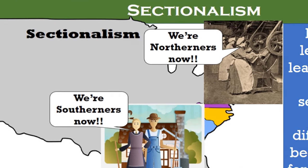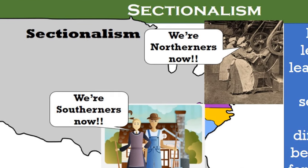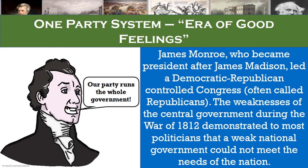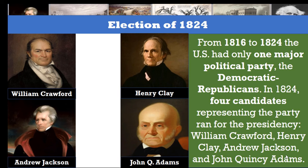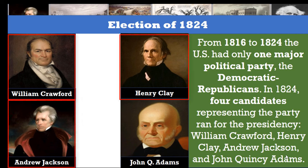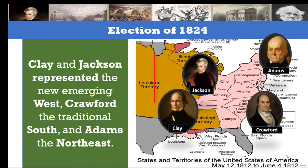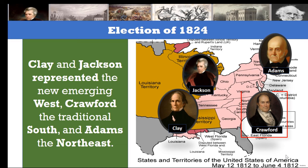In a previous lesson, we also learned about the rise of sectionalism, in which different regions began to look out for their own local interests. From 1816 to 1824, the US had only one major political party, the Democratic-Republicans, in what is known as the Era of Good Feelings. In 1824, four candidates representing the party ran for the presidency: William Crawford, Henry Clay, Andrew Jackson, and John Quincy Adams. Clay and Jackson represented the new emerging west, Crawford the traditional south, and Adams the northeast.